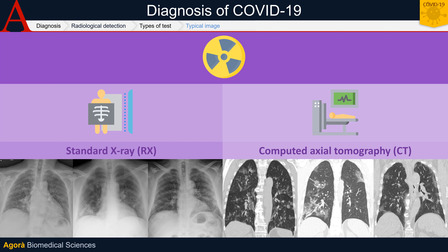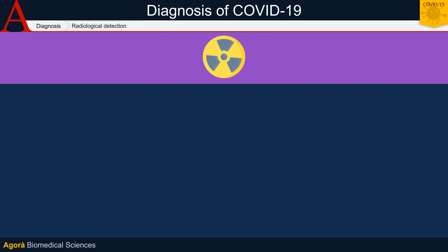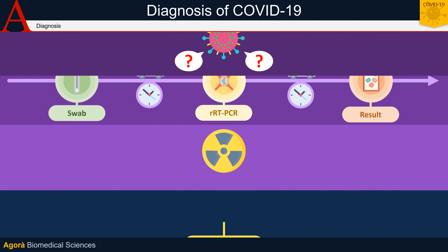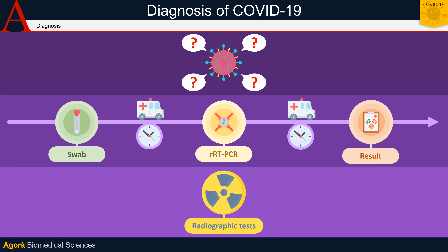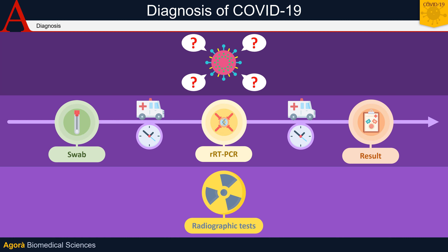On the other hand, pulmonary consolidations can be secondary to bacterial over-infections. Since these radiological pictures are also present in other lung diseases, the molecular data, or RT-PCR, to confirm the diagnosis of COVID-19 in the patient is always necessary. We can say therefore that there is strength in numbers — and in this case, in the diagnosis.